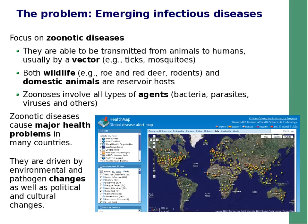Zoonotic diseases include all types of agents: bacteria, parasites, viruses, and others. Being a major health concern, they are gaining more and more research interest in many countries. The world map shown here provides a snapshot of disease distribution.